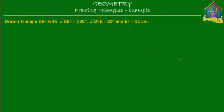So here is how the triangle will look like roughly. This is the line EF that's equal to 11 centimeters. So this is E, this is F, and this is 11 centimeters.